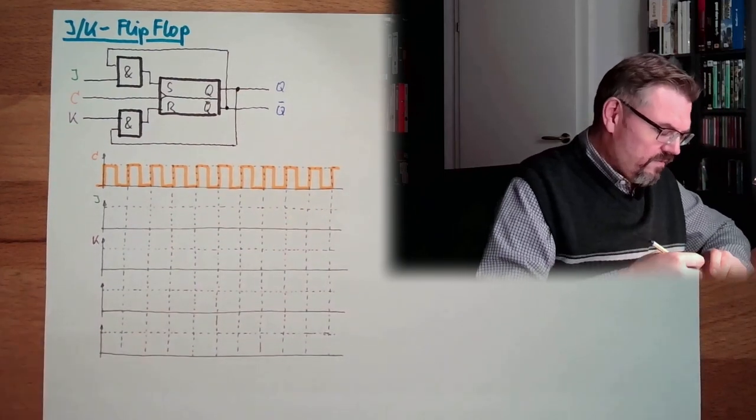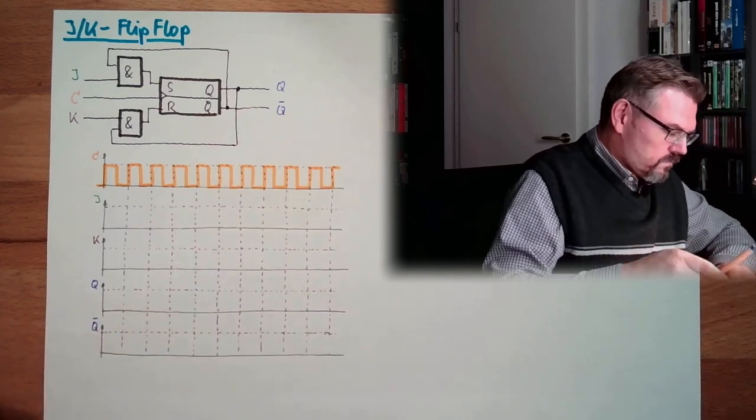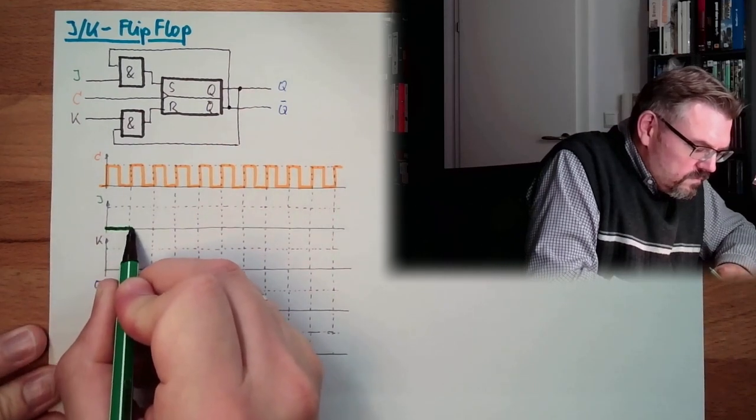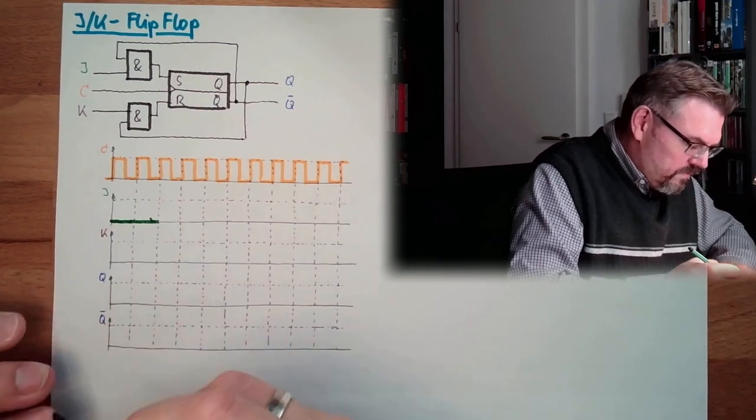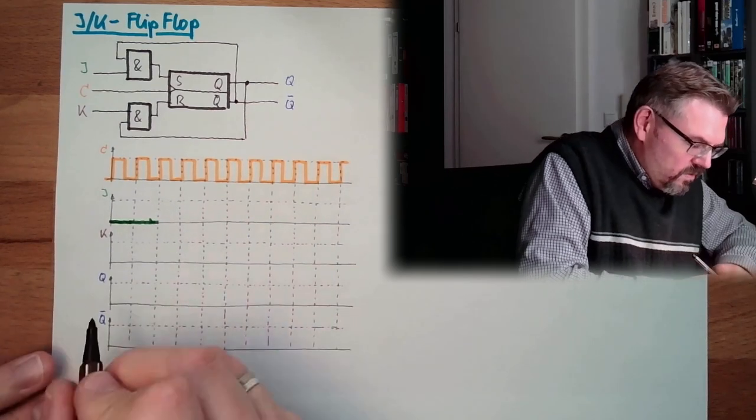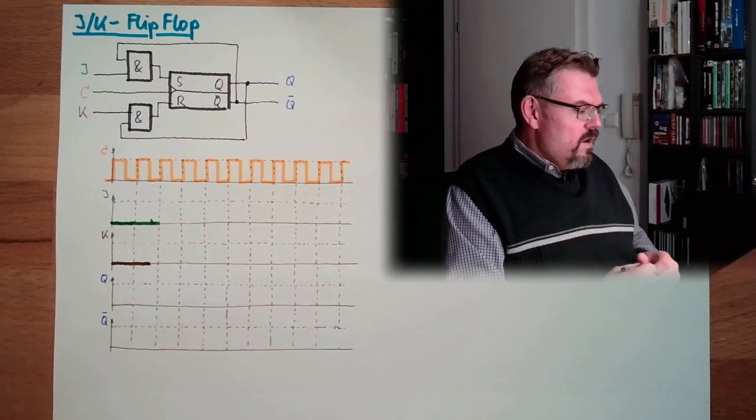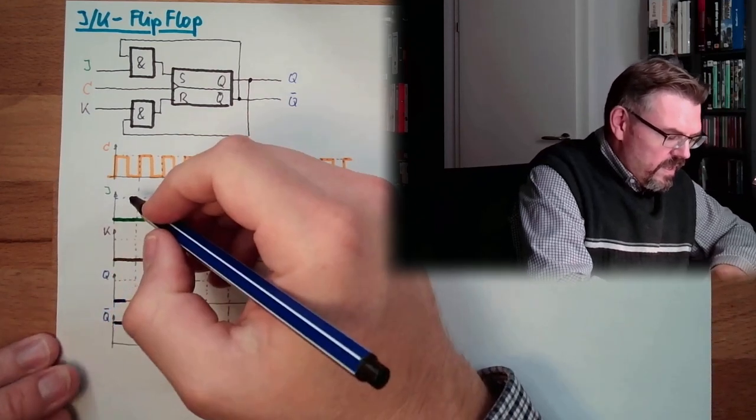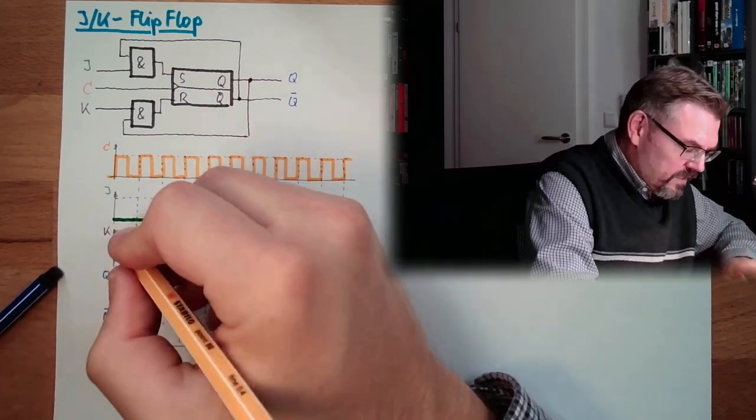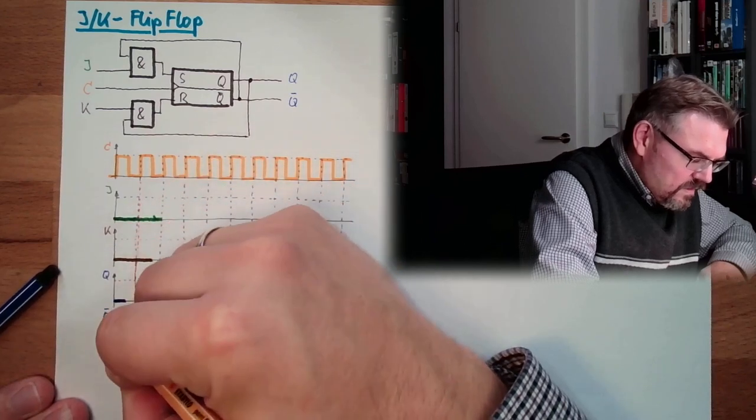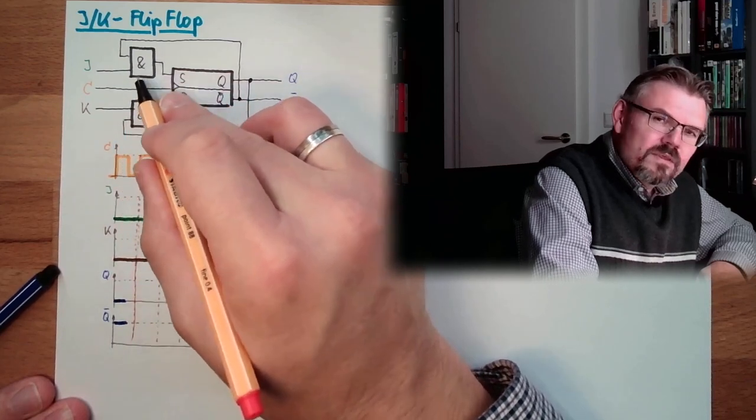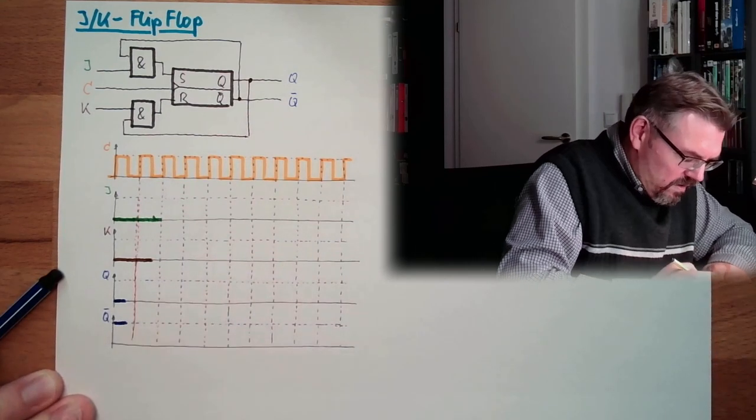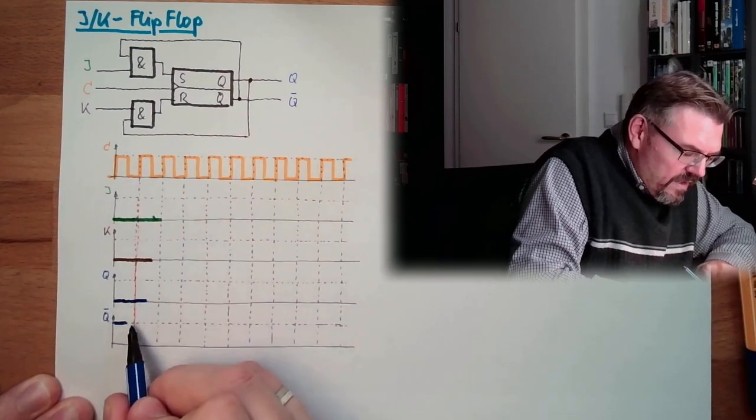And here we can have a look what is happening on Q and not Q. Let's first pretend J and K are both zero. Up to here somewhere, J and K both are zero. And let's also say currently Q is not set and not Q is there. Here we have a rising edge. What is happening at this rising edge? Regardless of the state, since J and K are zero, these feedback signals will never pass this AND. So J and K stay how they are. It doesn't really matter how they are. They stay that way.